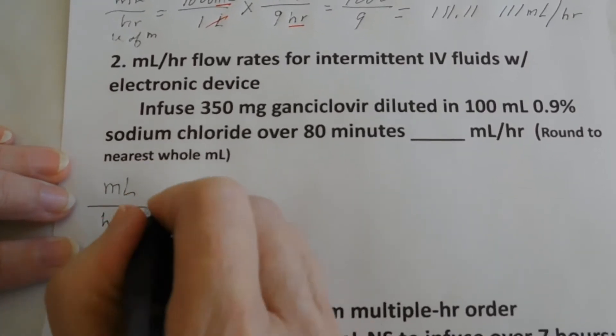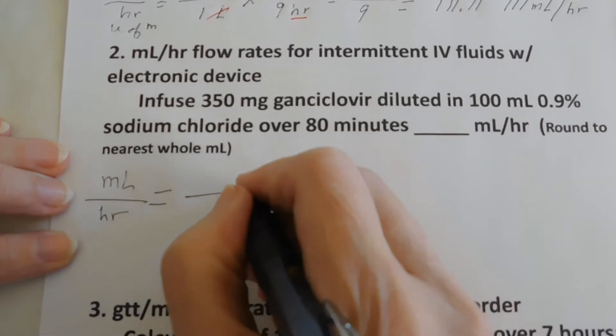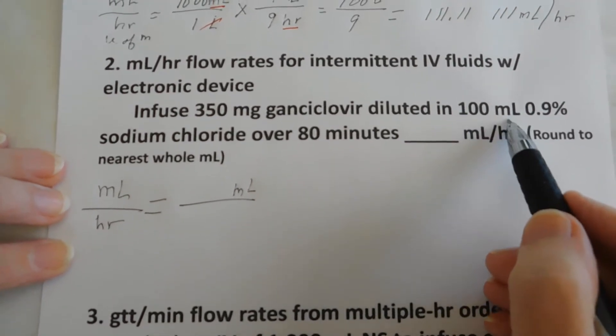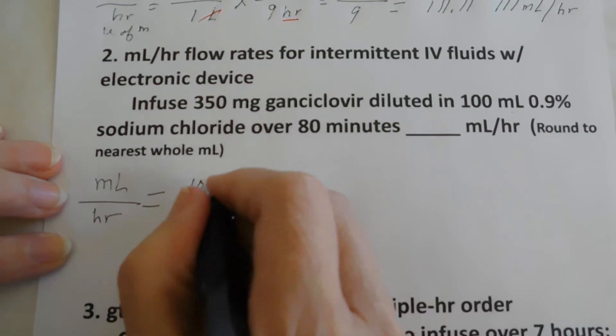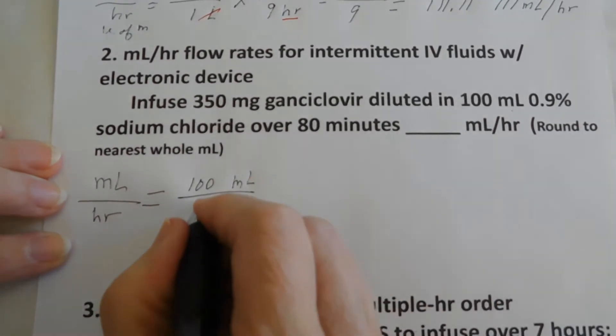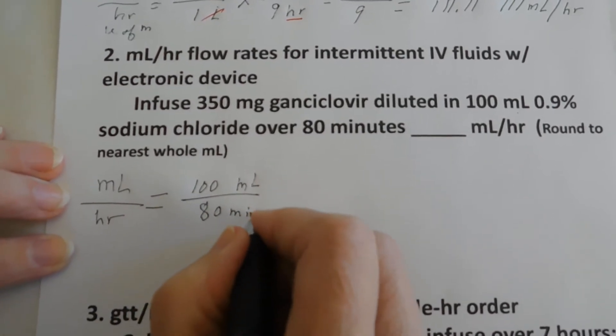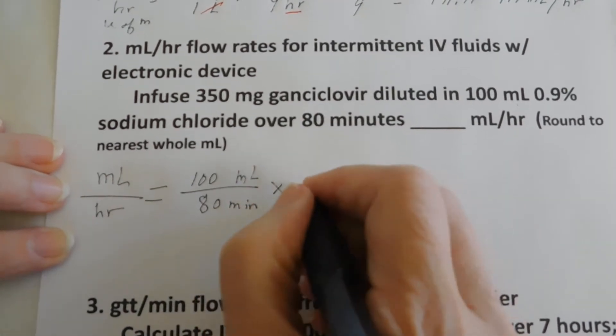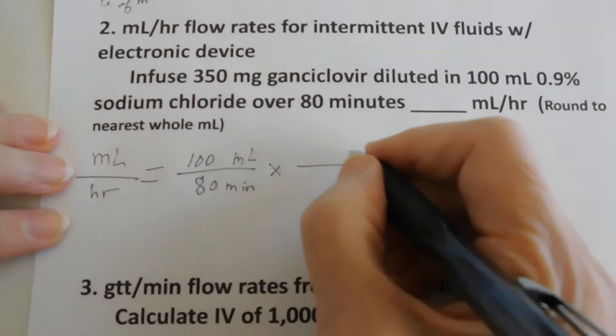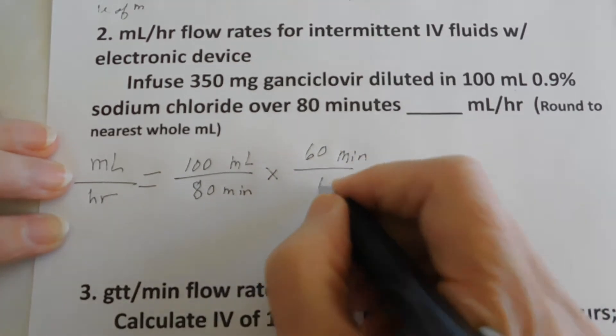So our units of measure equals. And we know that the first relationship will have to have milliliters. What do we have with milliliters? We have 100 milliliters. And it's 100 milliliters in 80 minutes. That's not hours. That's minutes. So we know that we need a conversion factor that converts minutes to hours. So what is that? So minutes climb the hill. Minutes, there are 60 minutes in one hour.